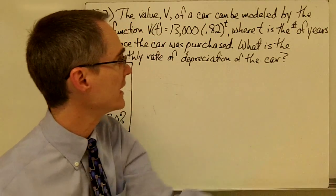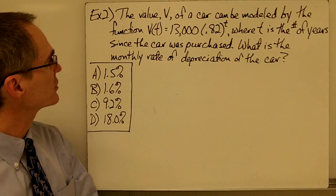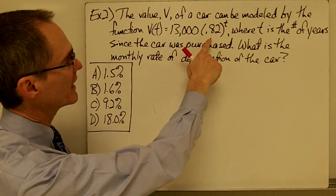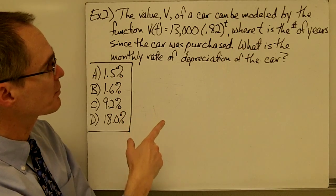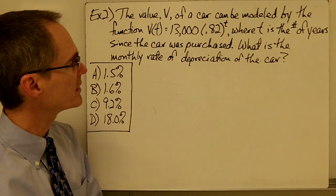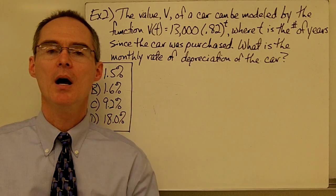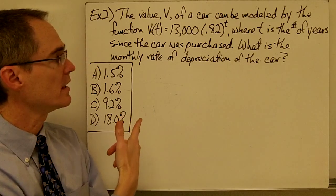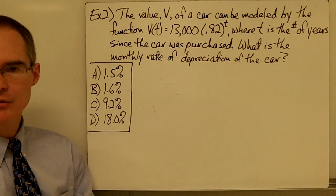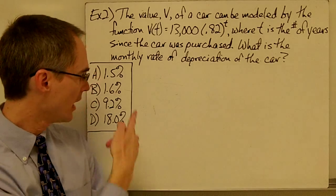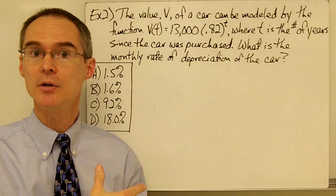Let's look at another type of problem involving interest. It says the value V of a car can be modeled by the function V(t) = 13,000 times 0.82 to the power of t, where t is the number of years since the car was purchased. The question asks: what is the monthly rate of depreciation of the car? There are answer choices — this question was taken from a released Math 2 final exam in North Carolina. You can pause and try it before watching the solution.